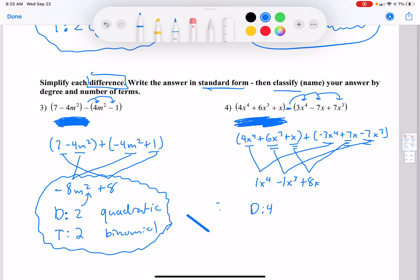So the degree is 4, the terms are 3, and that's going to be a quartic trinomial.